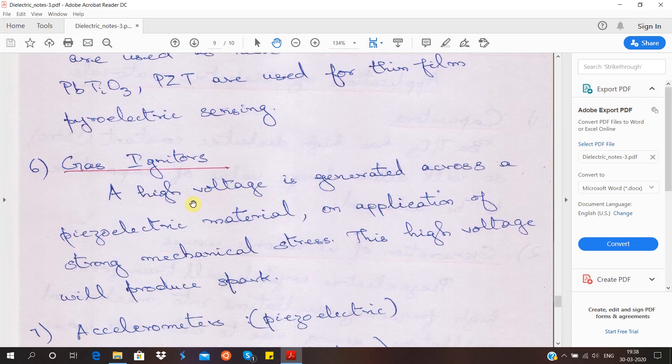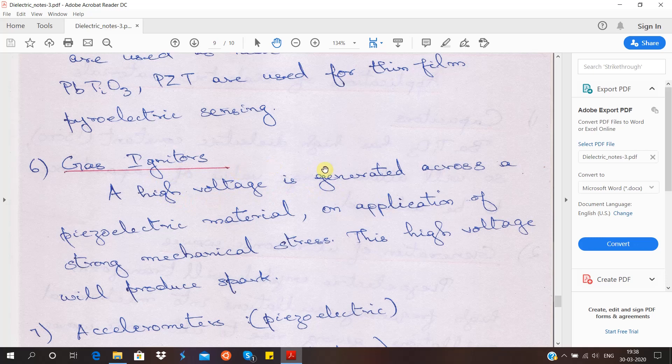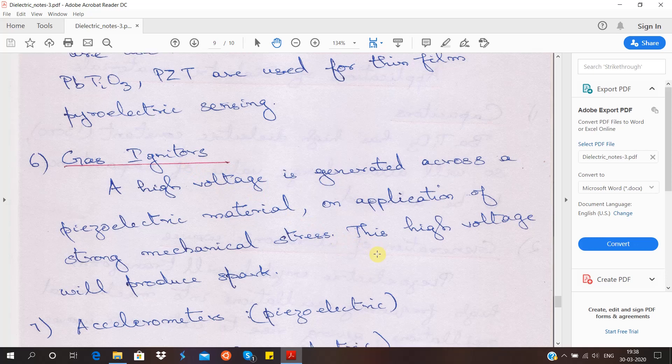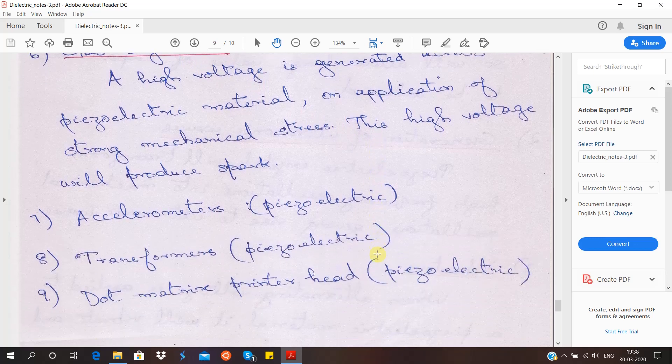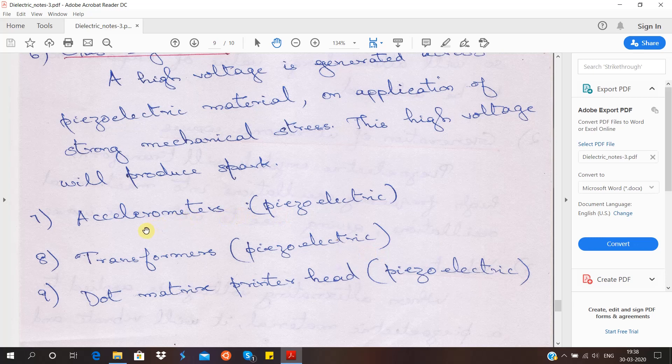Next, another one is gas igniter, which we already know. We either use it at kitchen or somebody uses for smoking. What happens is there is a piezoelectric material, and when you give a mechanical stress, then there is a high voltage being generated or polarization occurs and it produces a spark. This is an example for piezoelectricity. Further examples are accelerometers, transformers, and dogmatic printer head.